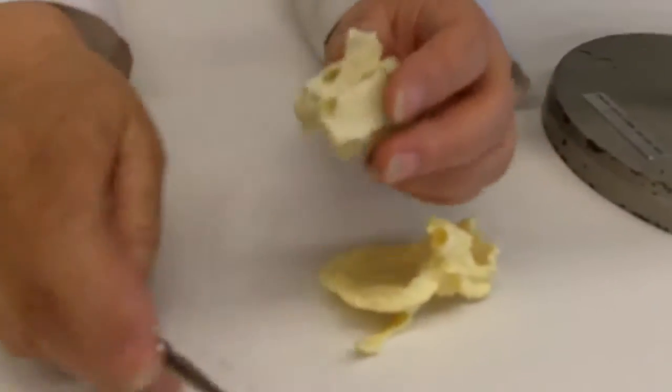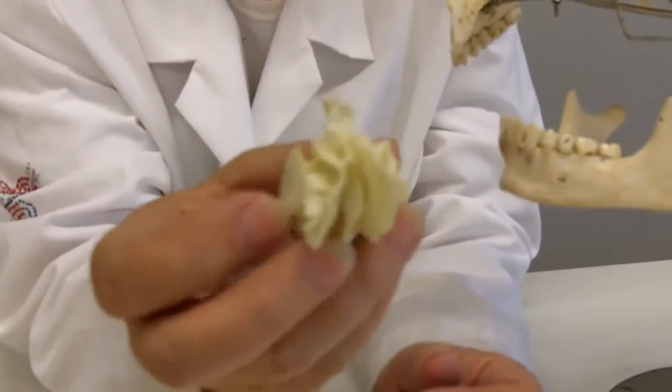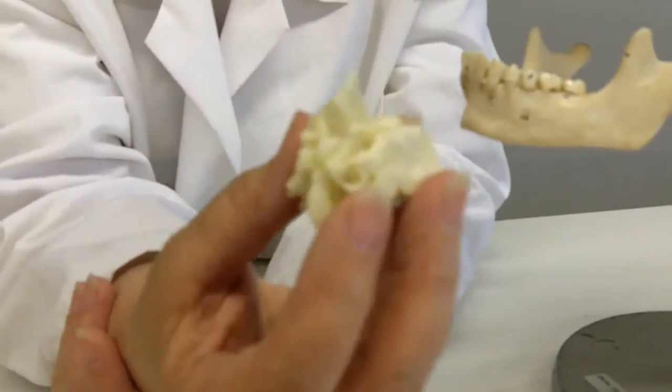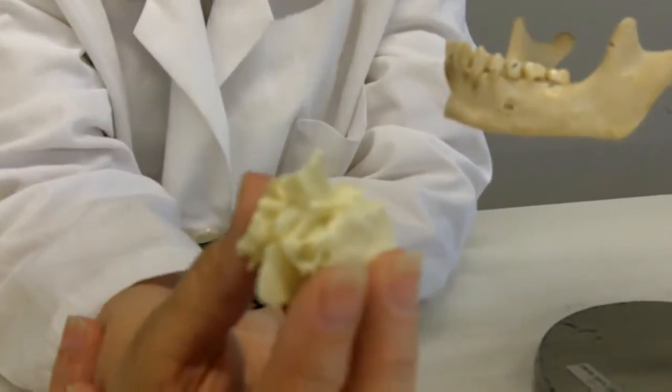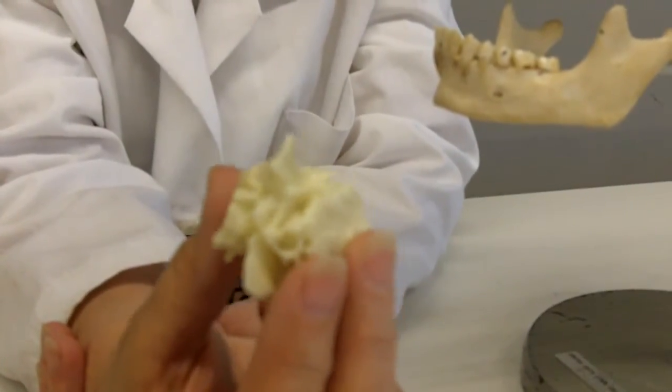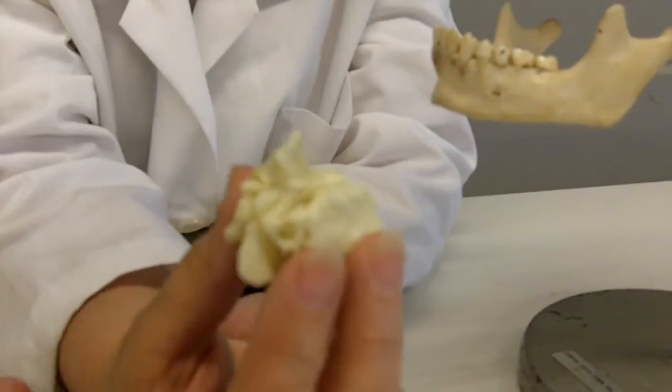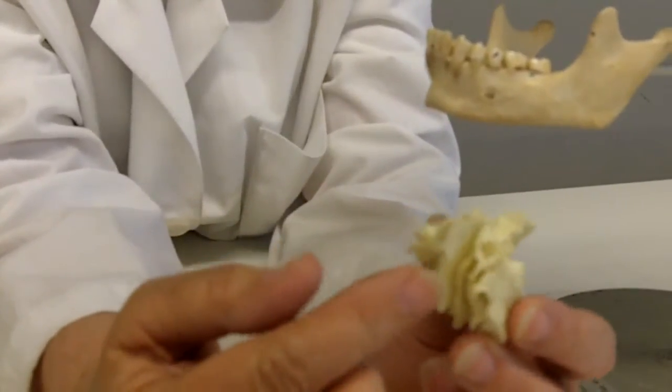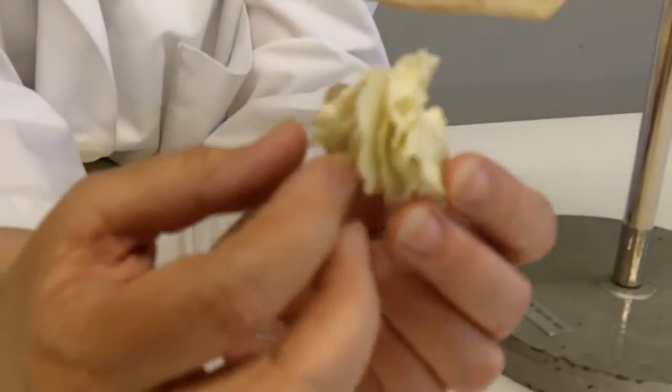And also the ethmoid bone. This is the one that broke off. This is a very nice casting of it. This is the what's called the crista galli, or cox comb. The falcereb reattaches there, some of the membranes surrounding the brain attach there. It helps hold the brain in place. You can also see the perpendicular plate that helps form the nasal septum with the vomer bone.